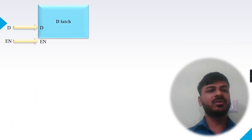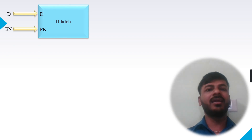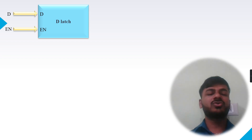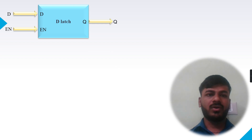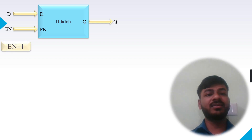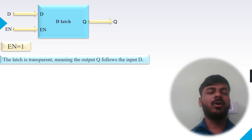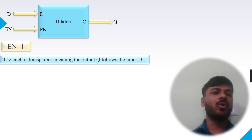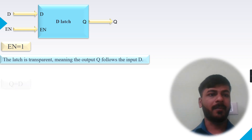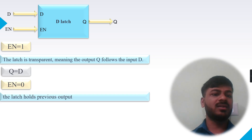In the positive level sensitive D latch, we have two inputs: D and Enable. Since latches are level sensitive, we don't have any clock, and there is one output Q. The functionality is: when Enable is high, the latch acts as a transfer — the output Q will follow the input D, meaning the latch holds the current value of D. When Enable is zero, the latch holds the previous output.